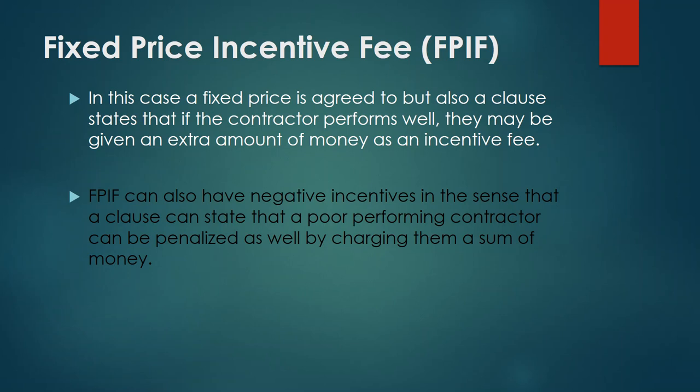There is also a negative incentive in fixed price incentive fee contracts. If the contractor finishes in seven months instead of six, you could penalize them — for example, deducting rental income lost for one month, say three hundred or four hundred dollars. You can deduct that from the contractor's fees or ask them to pay it back. It's not uncommon to have both negative and positive incentives in a contract.